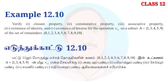Verify the Closure Property, Commutativity Property, Existence of Identity, and Existence of Inverse for the operation of Multiplication mod 11, where subset A equals {1, 3, 4, 5, 9} of the set of remainders {0, 1, 2, 3, ..., 10}.